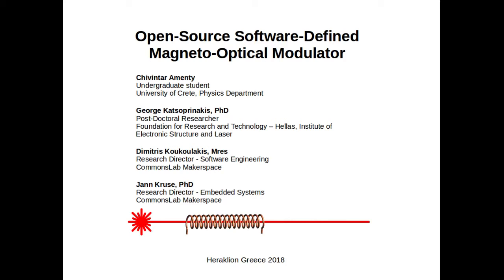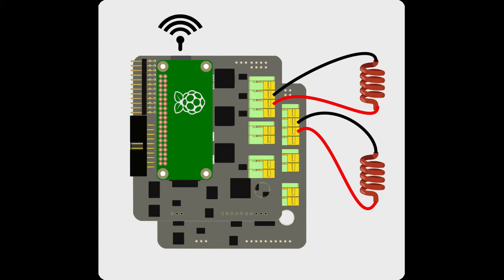The goal of this project is to produce a device which will modulate the polarization of light, such as a laser beam, with a software-defined waveform. This will provide a powerful and versatile tool to perform a broad spectrum of measurements.